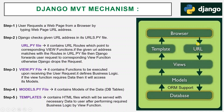Django checks the user-provided web address in its URL file. If the web address provided by the user matches with the content in the URL file, then Django routes that particular request to the views layer. In views, some predefined functions are defined and made ready.